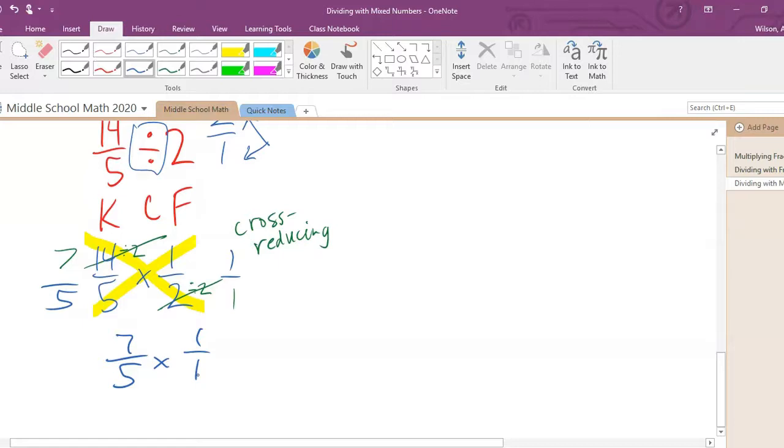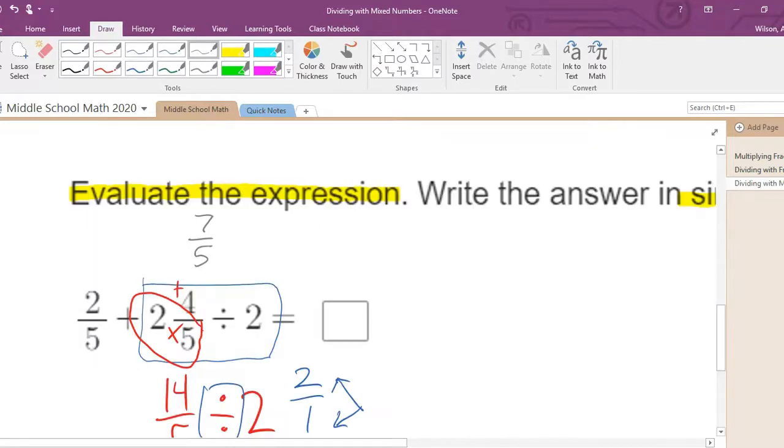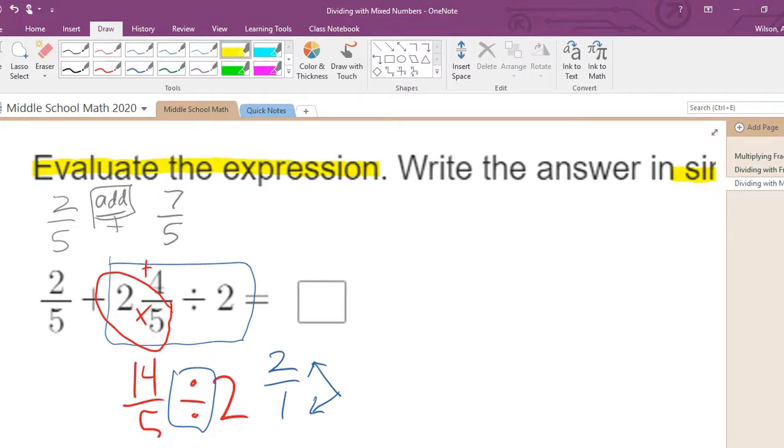So basically, we replace everything inside this box here with seven fifths. So you're now staring at two fifths plus seven fifths. And hopefully you remember how to add fractions. You have to have common denominators. Well, we actually already have common denominators. The fives. Those are in common.